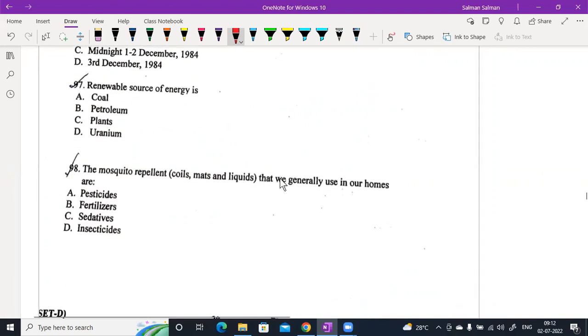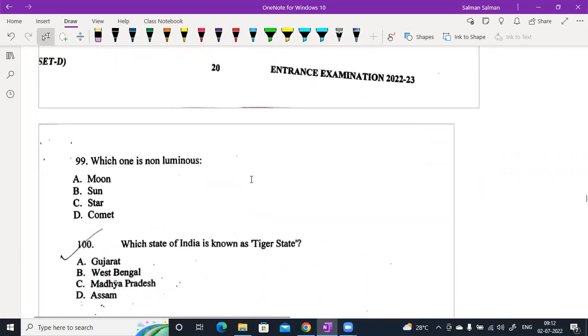Renewable source of energy is plants. Mosquito mats, coils, and liquids that we generally use in our homes are insecticides. Which one is non-luminous? It is Moon. Moon is not light in itself. Which state of India is known as Tiger state? It is known as Madhya Pradesh.